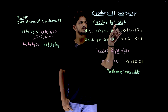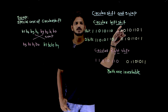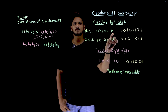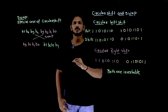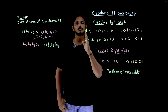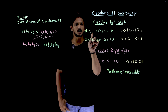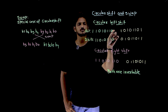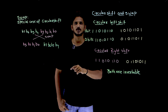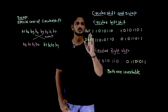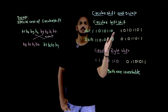So let us try to understand how they are going to be used in our modern block cipher. Circular left shift means, take 8 bits as the input. If you want to left shift 1 bit, the last bit is moved to the first position, and the remaining bits stay as they are. That is what left shift means.